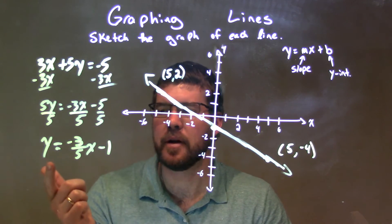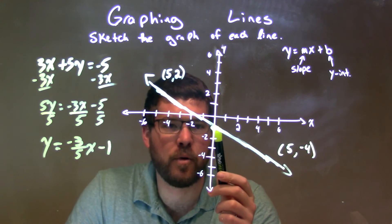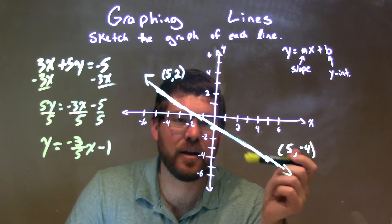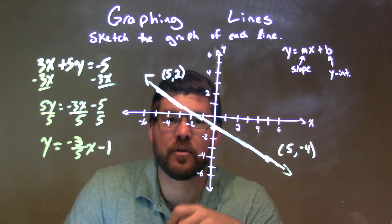This gave me y by itself, and that's y equals negative 3 fifths x minus 1. Negative 1 was where we crossed the y-axis, and negative 3 fifths was our slope. So we applied that both ways from that main point to get our final answer and our line.